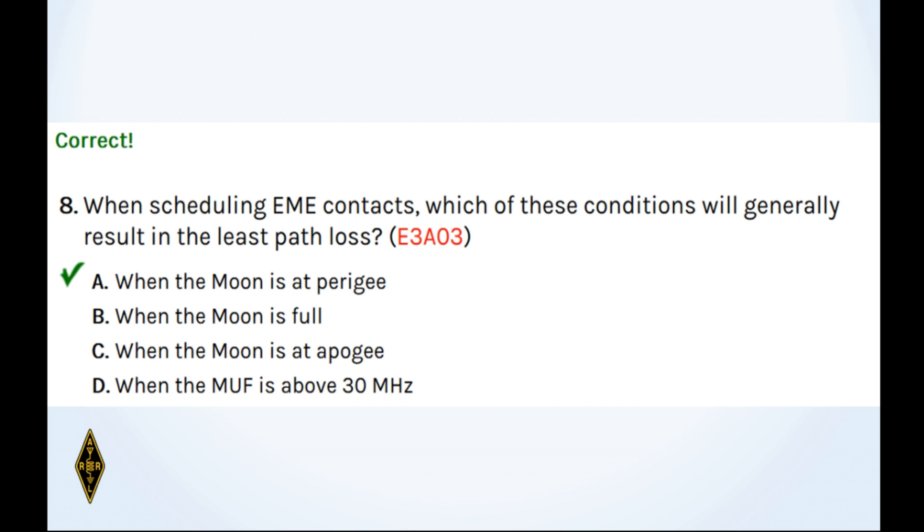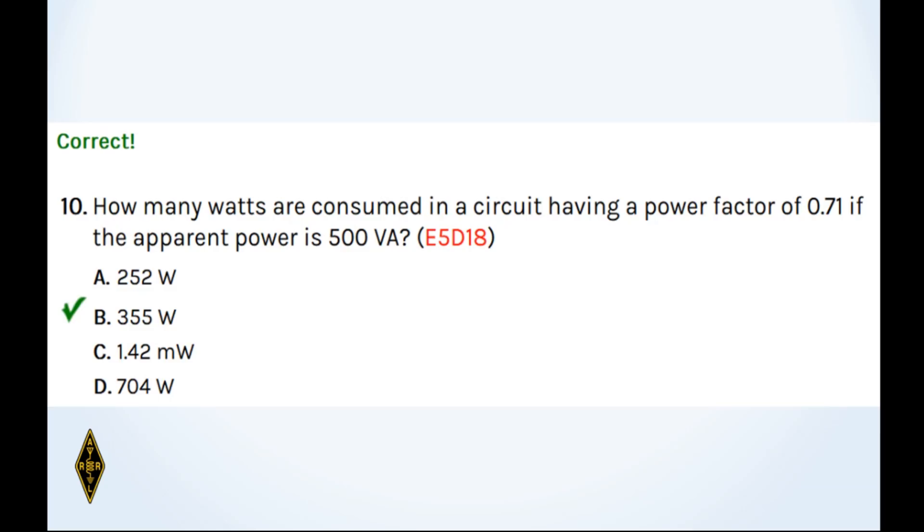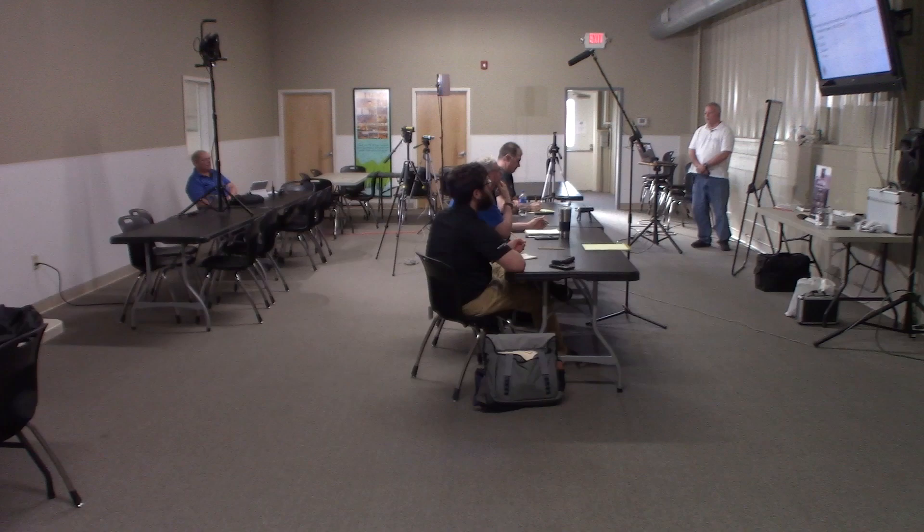And why is de-emphasis commonly used in FM communications receivers? For compatibility with transmitters using phase modulation. Phase modulation has a normal rising output with increased modulation frequency. So we need that. 9A. And 10. How many watts are consumed in a circuit having a power factor of 0.71 if the apparent power is 500 volt amps? Volt amps times power factor equals, in this case, 355 watts. That's the real work being done in the circuit. That's easy to estimate. Just multiply 7 times 5. So 10B.